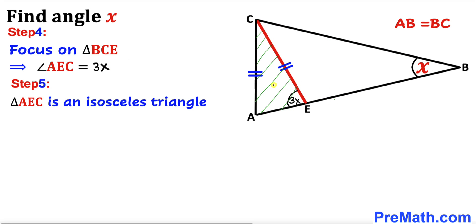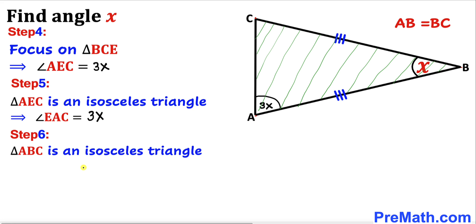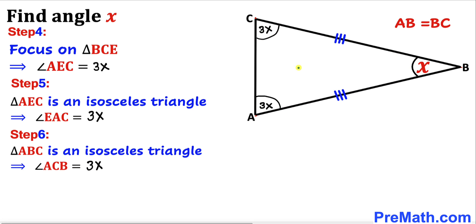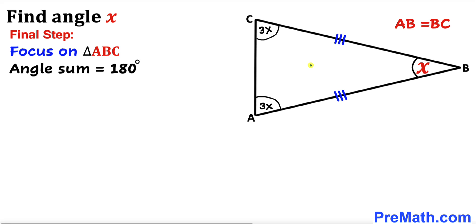Now let's focus on triangle AEC. We know that this is an isosceles triangle since this side length equals this one. That means if this angle is 3X, this angle has got to be 3X as well, so angle EAC turns out to be 3X. Now let's focus on the big triangle ABC. We know it is an isosceles triangle since AB equals BC, so angle ACB also turns out to be 3X.